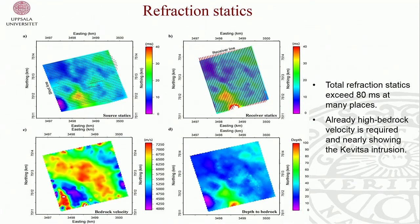When processing the data, one of the key steps is correcting for statics — removing overburden thickness and velocity effects. We realised a very large velocity was required for the intrusion, which was not a surprise because it is an ultramafic rock. We are talking about 7,000 to 7,500 metres per second velocity background, and I will talk a little bit about the trouble with that kind of background.